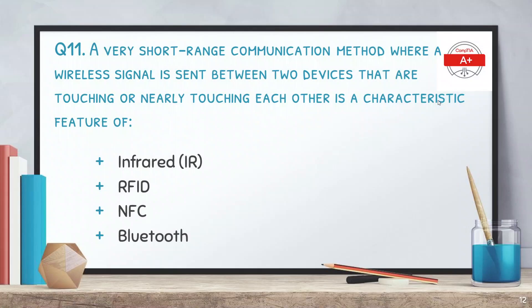Question number 11: a very short range communication method where a wireless signal is sent between two devices that are touching or nearly touching each other is a characteristic feature of which option? The options are infrared, RFID, NFC, and Bluetooth. The answer is NFC, which stands for near field communication. This feature is available in modern smartphones and can be used to transfer data by keeping devices very close or nearly touching.